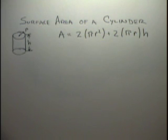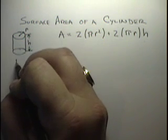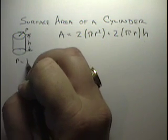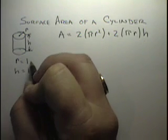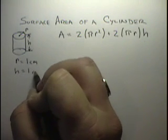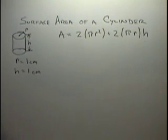Now, to solve this formula, we first need to know the values of r, radius, and h, height. So we're just going to put in a couple values here and substitute them. We're going to set the height to be 1 centimeter, and the radius to be 1 centimeter.